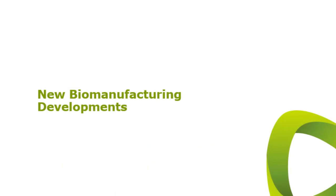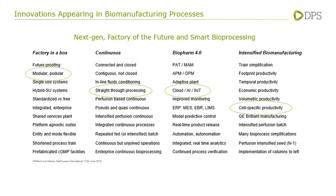Now I'll talk about general improvements in biomanufacturing that apply to mRNA manufacturing — often called next-gen manufacturing, the factory of the future, or smart bioprocessing. I've grouped these into four categories. The first is the concept of a factory in a box, which includes modular and podular facility designs — prefabricated suites delivered to the final build location and assembled on-site. There are many advantages to prefabricated design, including the fact that experts fabricate each suite, reducing reliance on local labor that may require specific training. Another aspect is continuous processing, which has many components including partial, incomplete, and straight-through processing.